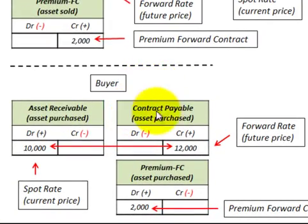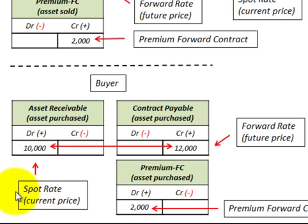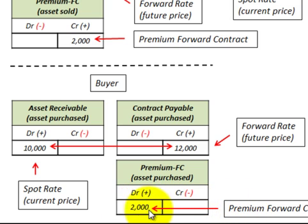From the buyer's perspective, we have a liability as a contract payable for the commodity purchased. We credit it for the forward rate — $12,000. On the asset side, we have an asset receivable for the commodity purchased, so we debit it for the spot rate — $10,000. We need a balancing entry between the contract payable of $12,000 and the asset received valued at $10,000, so we set up a contra liability account — the premium on the forward contract — and debit it for $2,000. The debits of $2,000 plus $10,000 balance with the credit on the contract payable of $12,000.